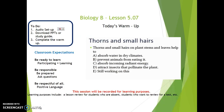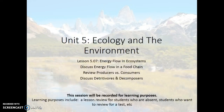We'll start with a warm-up. Thorns and small hairs on plant stems and leaves help to: A. Absorb water in dry climates, B. Prevent animals from eating it, C. Absorb incoming radiant energy, D. Attract insects that pollinate the plant. The correct answer is B — those thorns and small hairs are a plant structural defense to prevent animals from eating them.